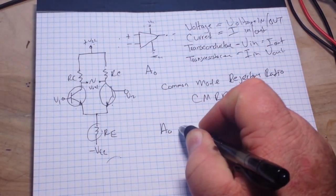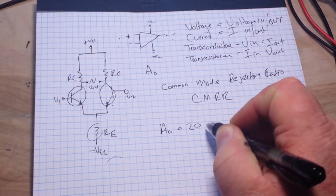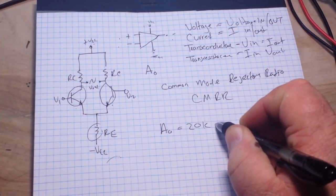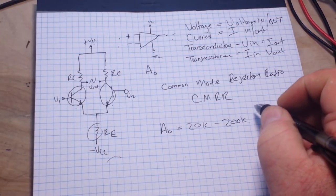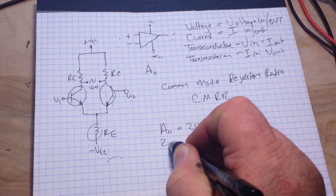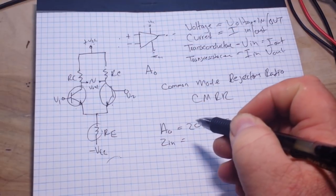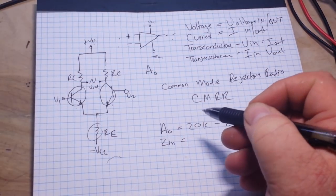So the things we want to keep in mind here are our open loop gain, which is thought to be infinity, but in real life it's going to be between 20k and 200k. Next is our input impedance, which is Zin, and it has a very high input impedance.